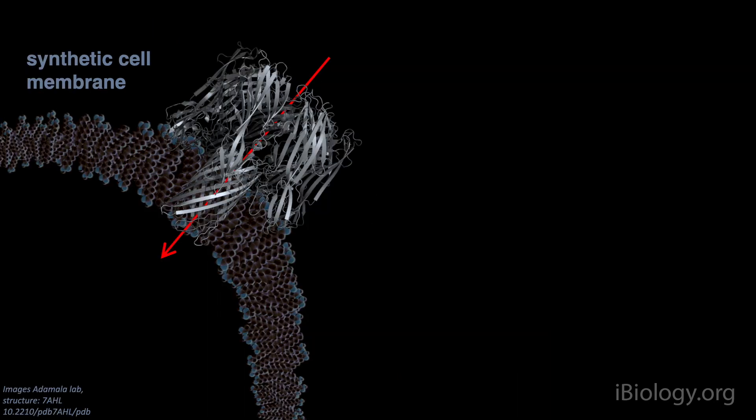In synthetic cells, we usually use simple channels that create rather nonspecific holes in a membrane. One of the most common channels is called alpha-hemolysin, which is originally a bacterial toxin.